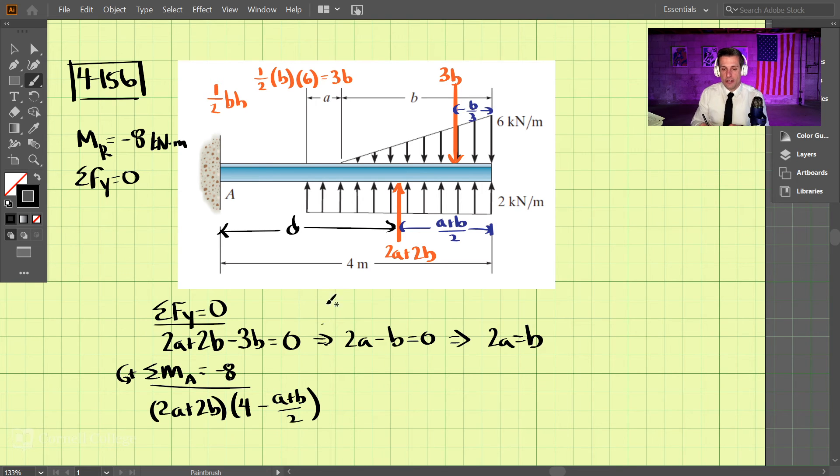For the top force, that creates a clockwise moment, which is negative. So we have -3b times the distance it's acting away. Using the same logic, if this whole thing is 4 meters, the distance is 4 - b/3. That all equals -8.